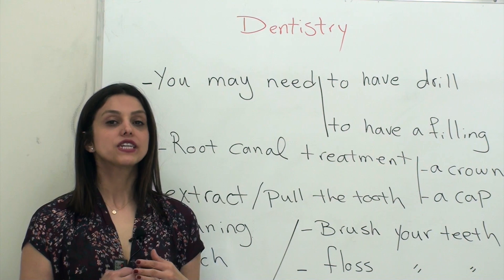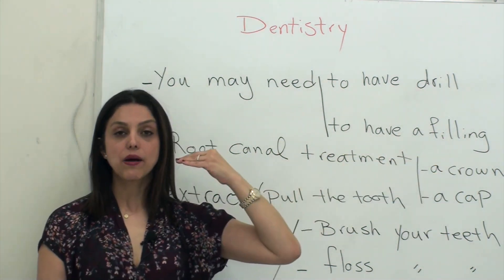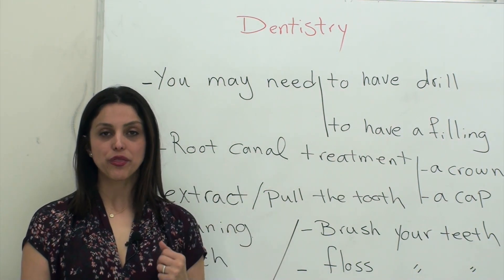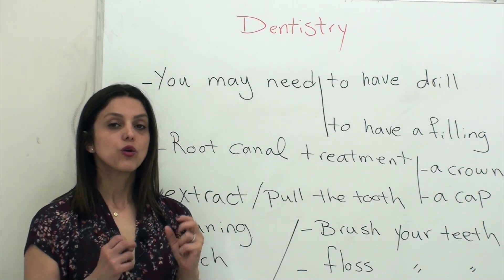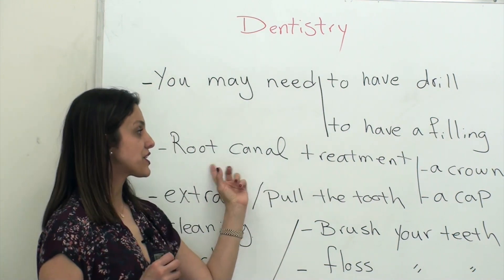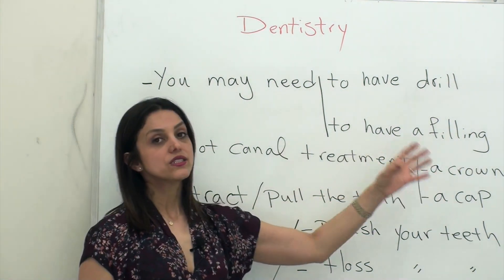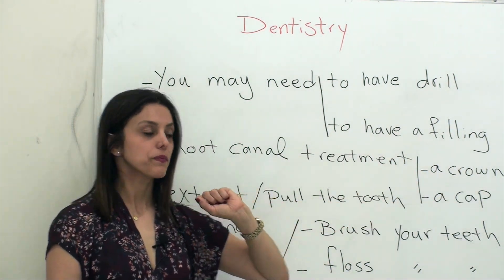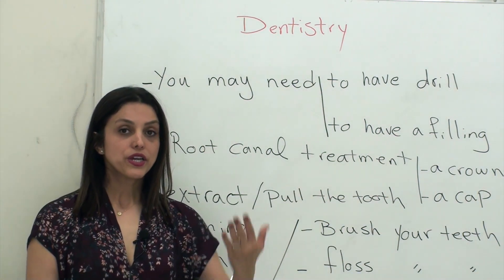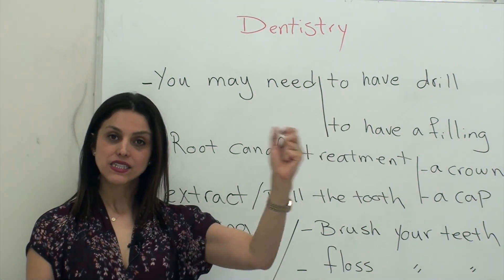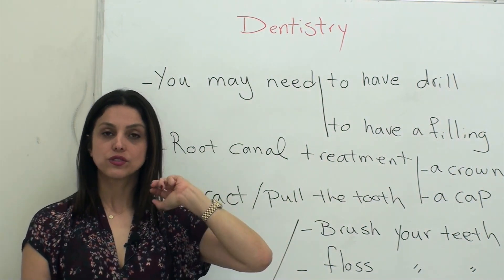After doing the root canal, they usually use a crown or a cap to support and protect your tooth from being broken. Because your tooth will be very fragile after root canal treatment, you need a crown or a cap to protect it. If it is very, very bad and there is no way to fix it, your dentist should extract your tooth, or pull the tooth out.